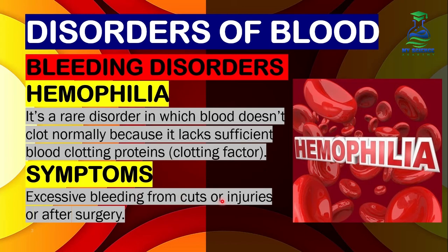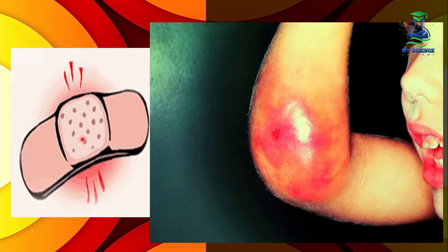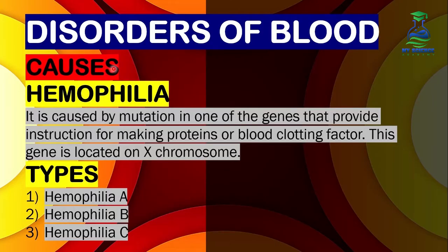The main symptom is excessive bleeding from cuts, injuries, or after surgery. In such patients, in the case of cuts, surgery, or any injury, blood does not clot as in a normal person, resulting in excessive bleeding because blood clotting factors or proteins are not present in sufficient amounts.